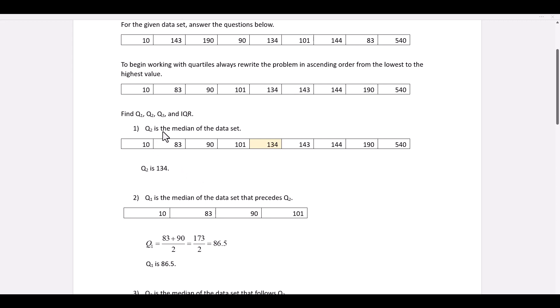Quartile 2 is the median of the entire data set. Since we have nine values, the median is 134. So quartile 2 is 134.